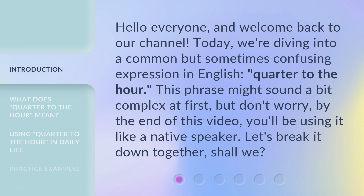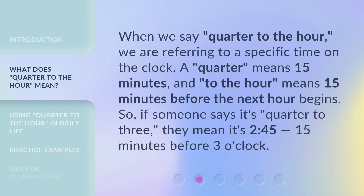Let's break it down together. When we say quarter to the hour, we are referring to a specific time on the clock. A quarter means 15 minutes, and to the hour means 15 minutes before the next hour begins.